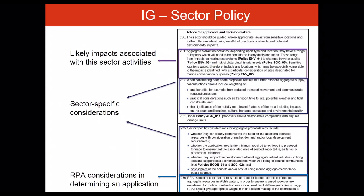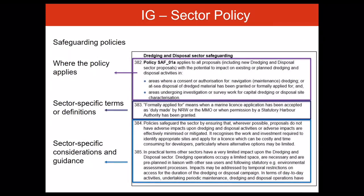Each sector has a section with advice for applicants and decision makers, including detail on the likely impacts associated with activities under that sector, and signposting to general policies likely to be relevant to any application from that sector. It then includes sector-specific considerations with different advice for applicants and for decision makers — for example, for aggregates: advice on transport movement, tidal constraints and local development requirements. The sector safeguarding policy section sets out where the policy applies and in what circumstances, gives any sector-specific terms or definitions, and based on the intricacies of the individual sector and likely relationships with other sector activities, provides sector-specific considerations and guidance related to safeguarding for each sector.